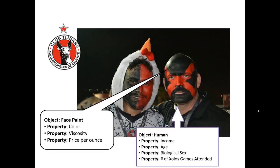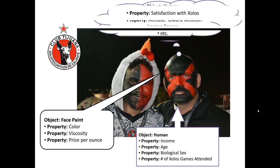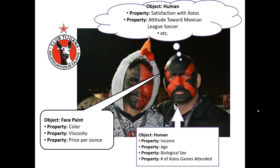In addition, we have objects that are human. Objective properties these humans may have would be income, age, their biological sex, and the number of solo games attended last year. In addition, these humans may have some subjective properties, such as their satisfaction with the Xolos and their attitude toward Mexican league soccer. It's these subjective properties that marketing researchers are often interested in measuring, but it's much trickier to figure out exactly the right way to do so.